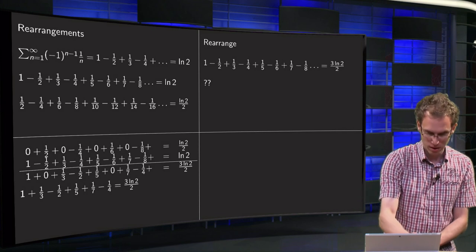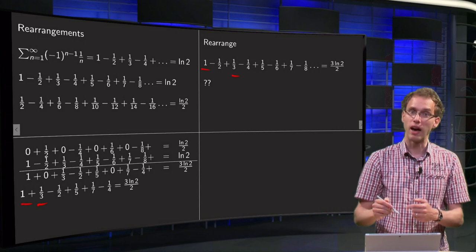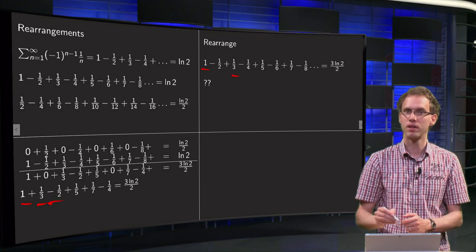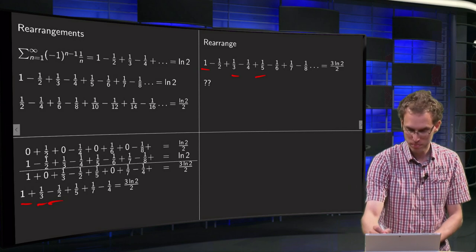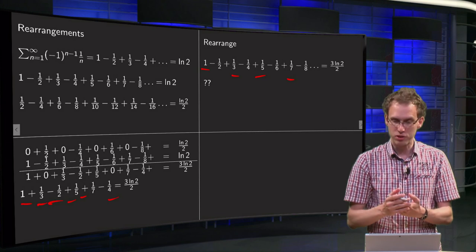We get a 1 + 1/3, and then I have the -1/2. Then I get a 1/5 + 1/7, and then the -1/4. And if you continue like this, I get a +1/9 + 1/11.